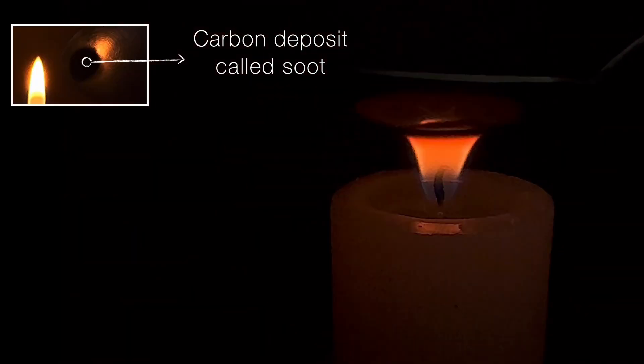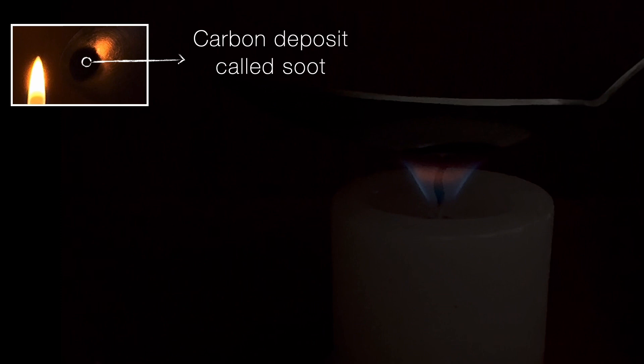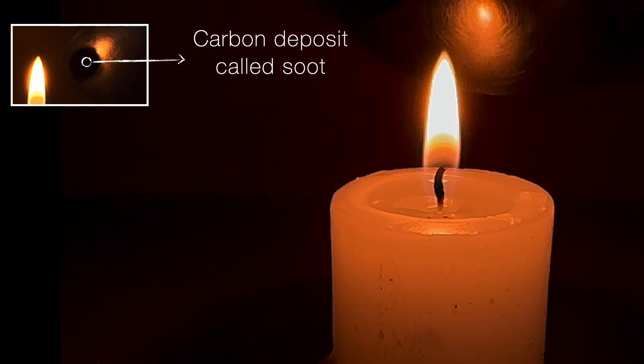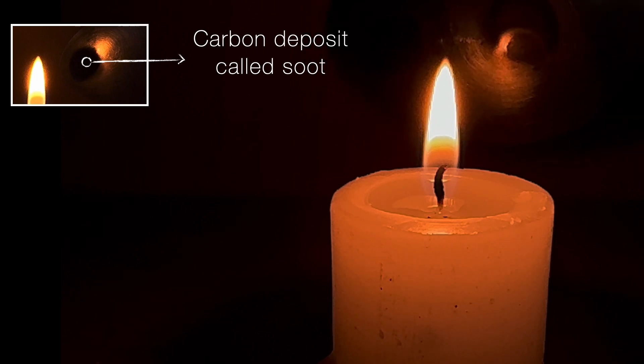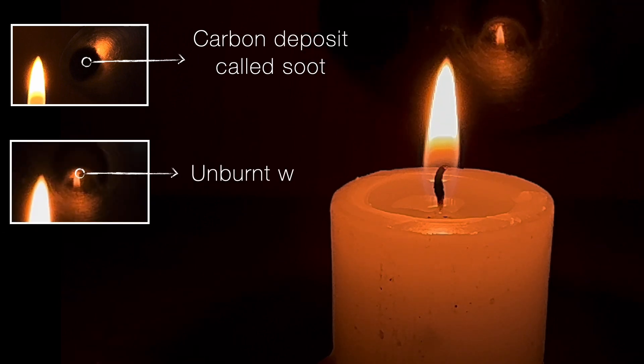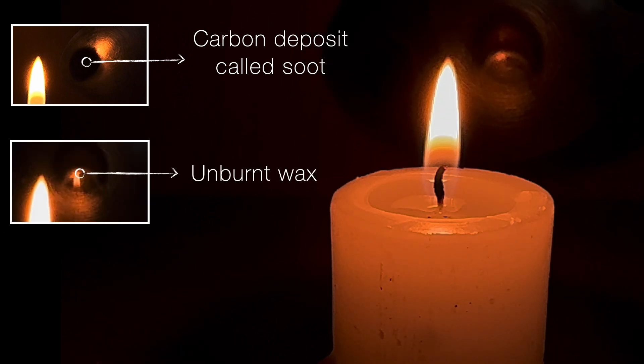Now let me put the spoon near the central part of the flame. Do you see that white mark? That is unburned wax. That white mark is unburned wax.